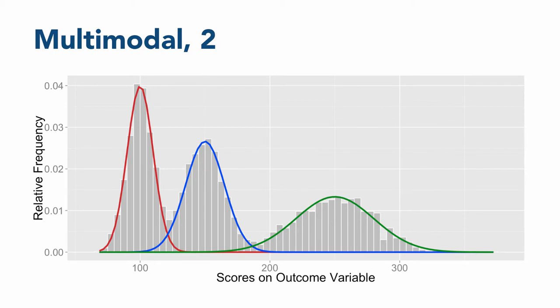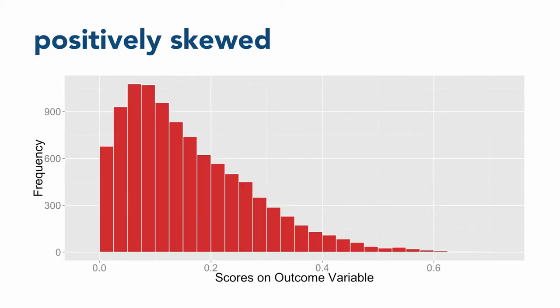Another important thing to look for in a histogram is whether the data are symmetrical, or whether they're skewed one way or another. For example, a normal distribution like we saw earlier is completely symmetrical. On the other hand, a distribution might have most of the scores at the low end, and a few especially high ones, like this.